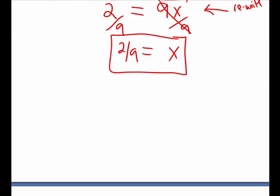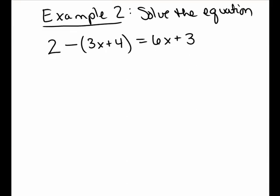Let's try another one. I want to solve the equation 2 minus the quantity (3x plus 4) equals 6x plus 3. First, I simplify on the left and simplify on the right. To simplify, I'm going to clear away any parentheses and then gather and combine like terms. I distribute the value directly in front of the parentheses, which is the negative, not the 2.